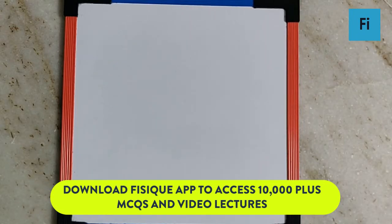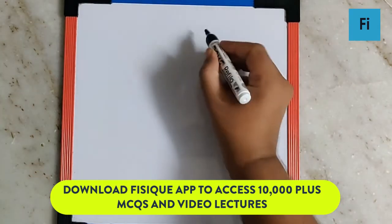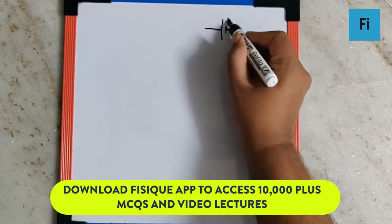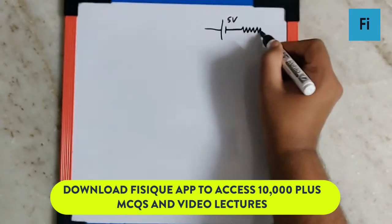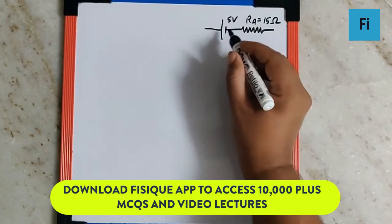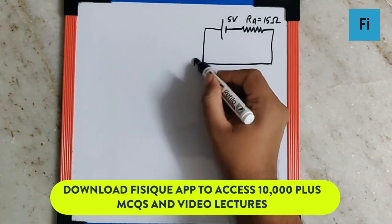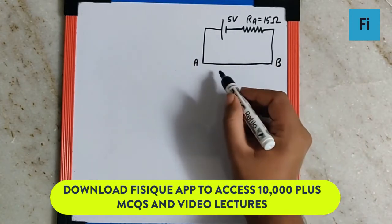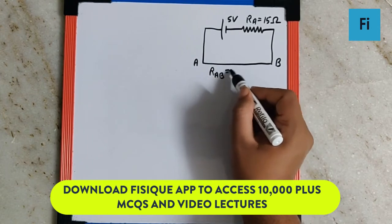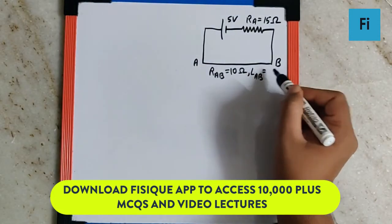The question says a potential gradient of 1 millivolt per millimeter is set up along a potentiometer wire AB to double its sensitivity RA must be. The diagram given in the question has a 5 volt battery, an external resistance RA which is currently 15 ohm, then the wire AB for which the resistance is 10 ohm and the length of the wire LAB as 2 meter.